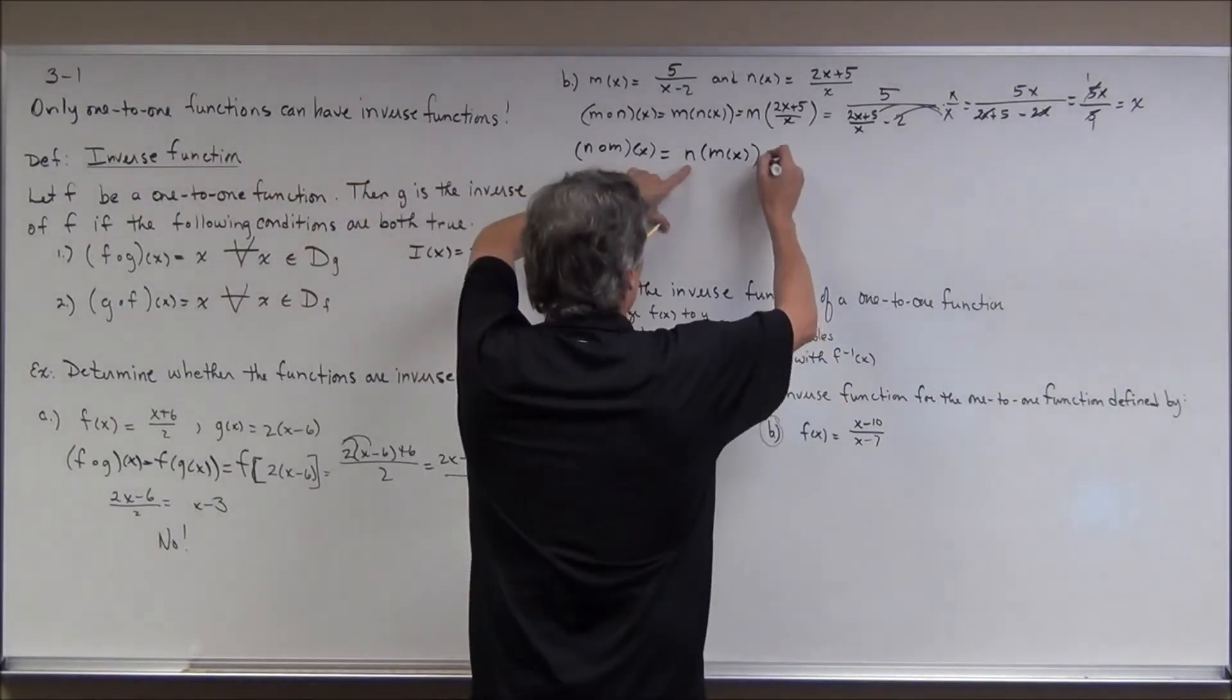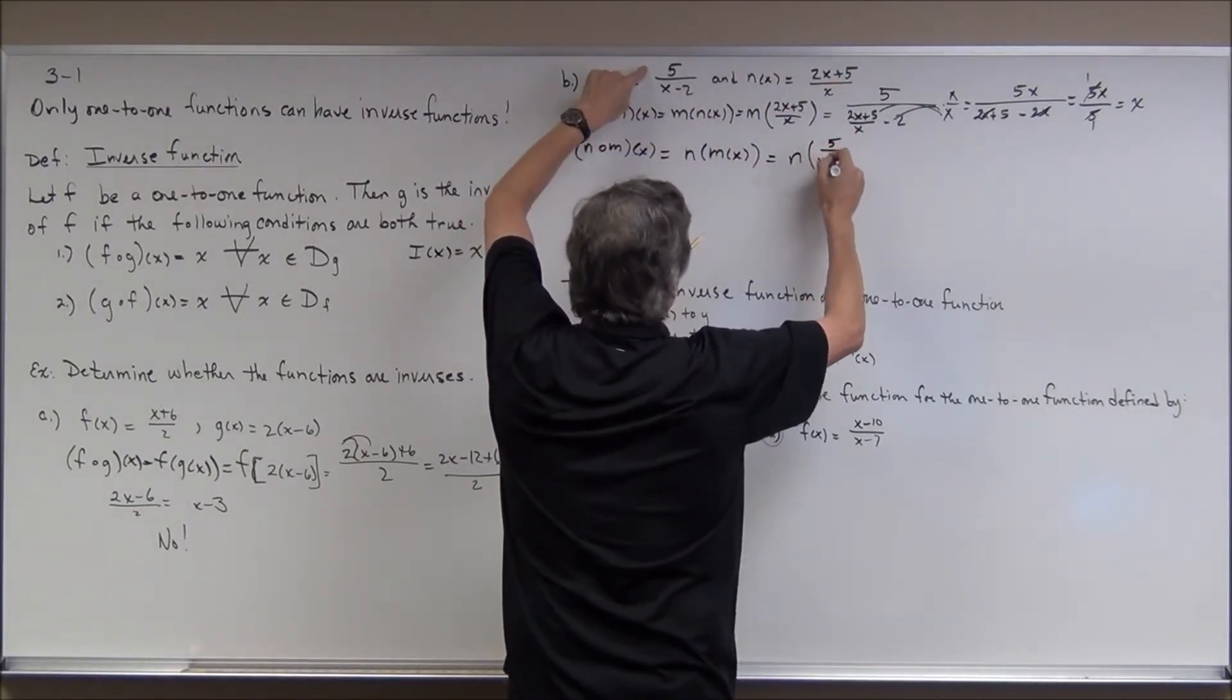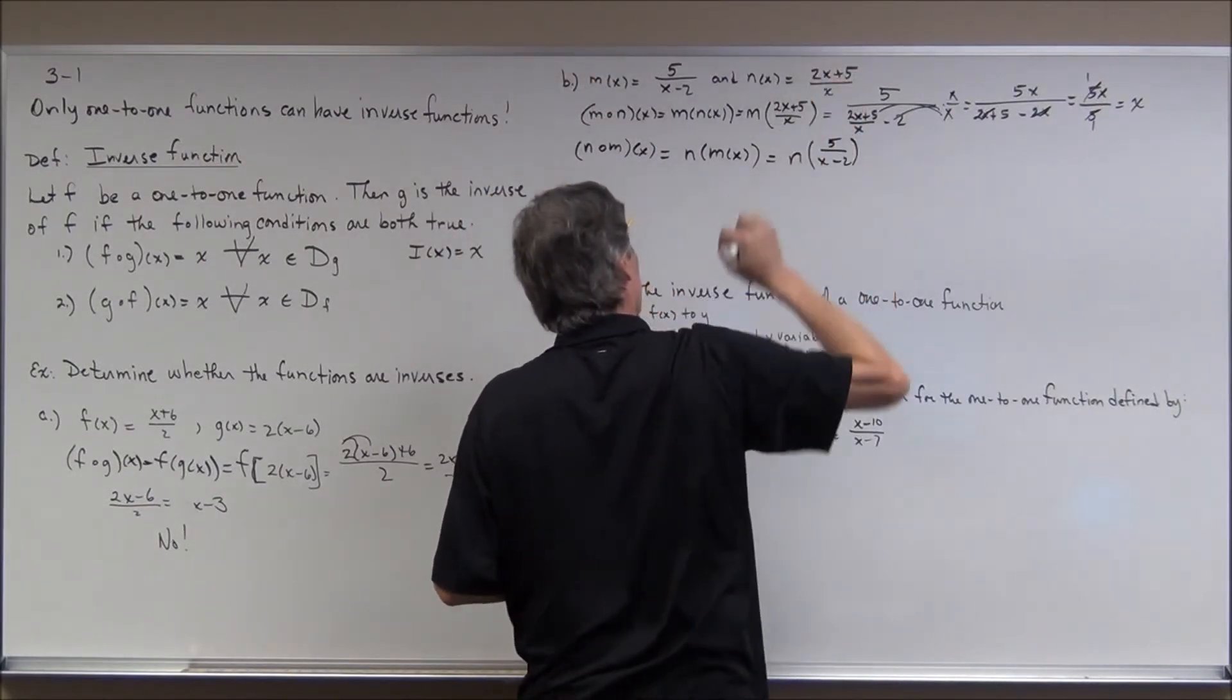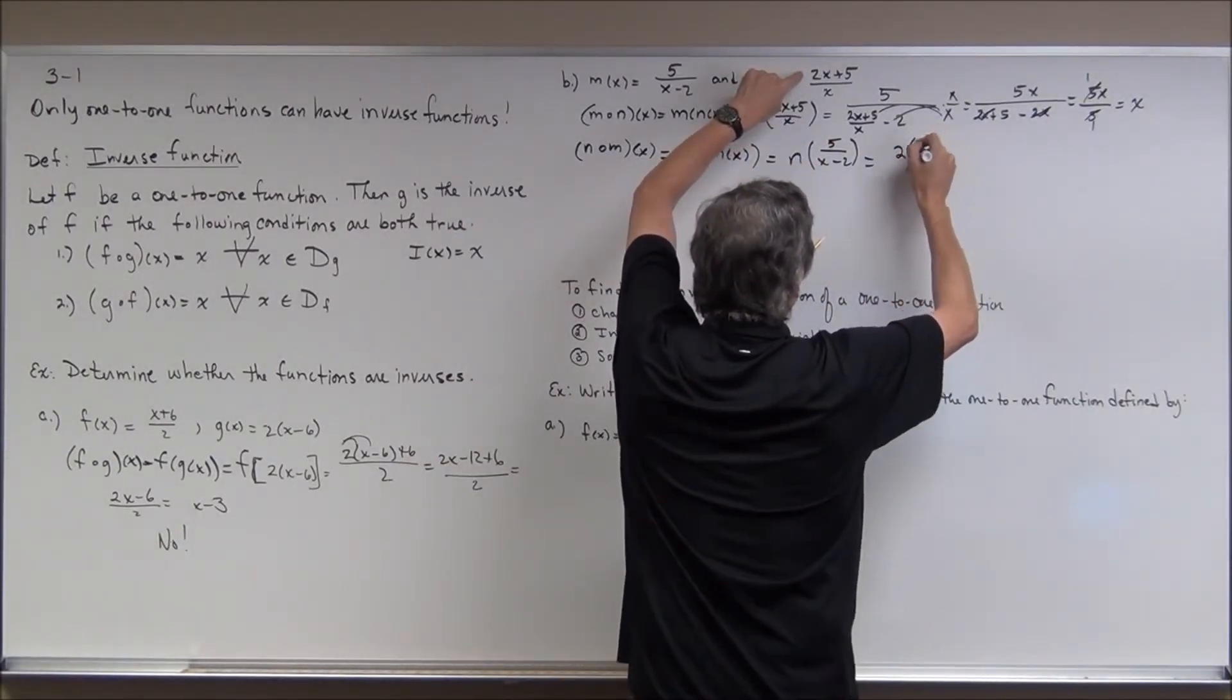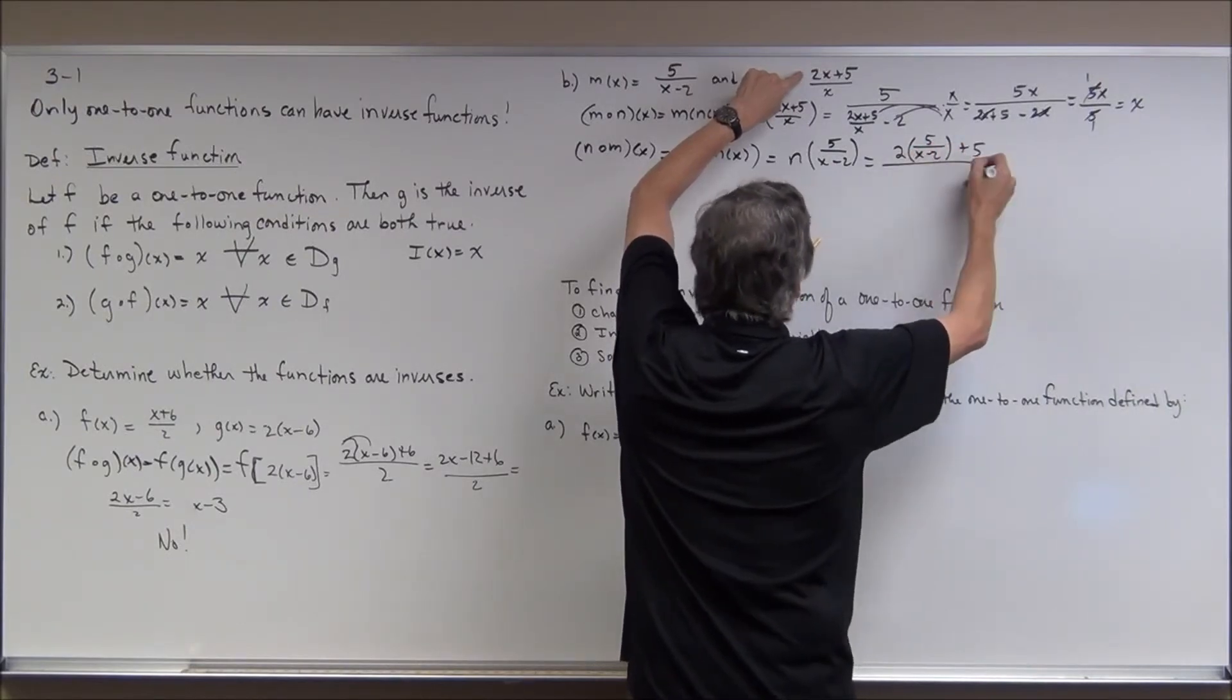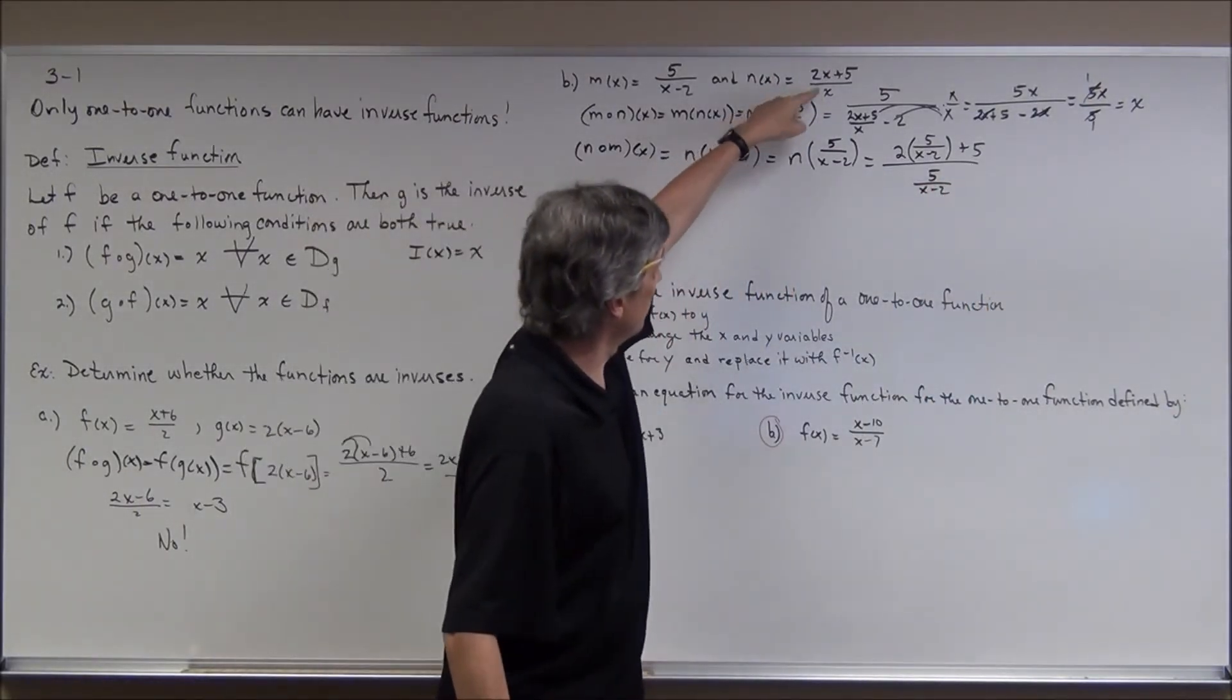So I have n circle m of x, which is n of m of x, which should be n of, here we go, 5 all over x minus 2. Now I'm going to plug all this in here and here in the rule for n. So that's going to be 2 times the quantity of 5 over x minus 2 plus 5 all over 5 over x minus 2. I have to plug it in for both spots here because the variable appears twice.